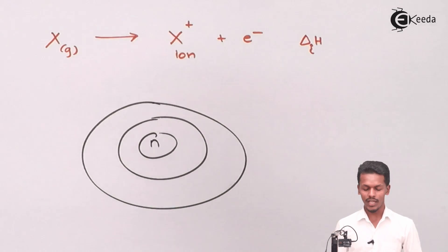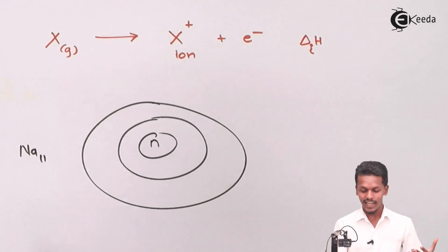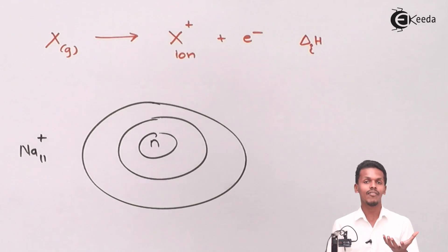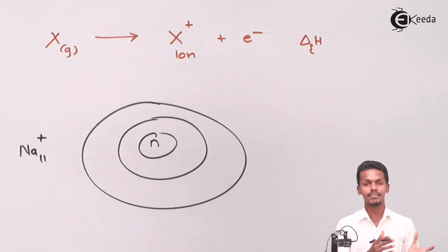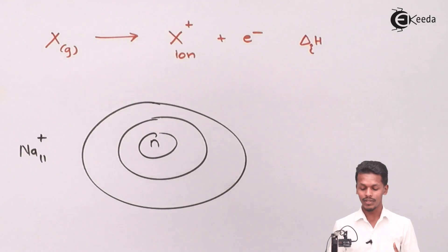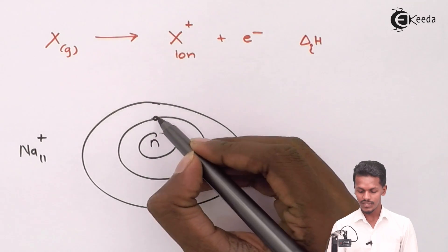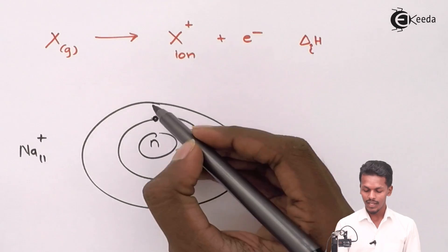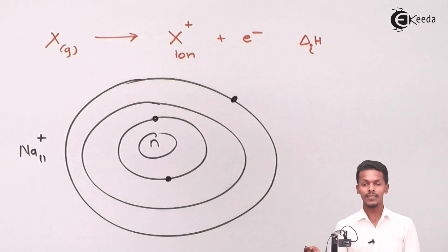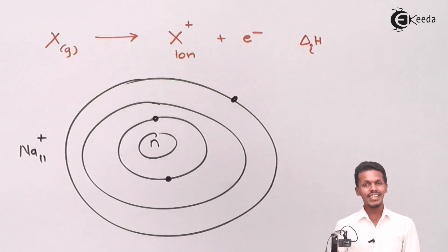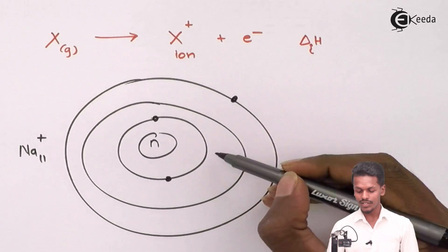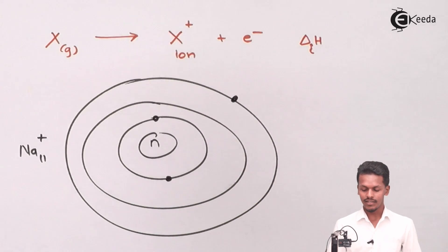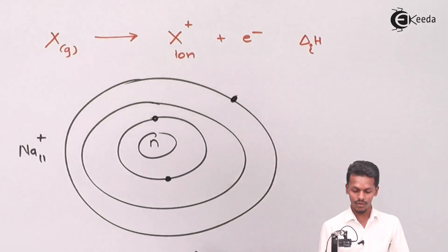Let's take sodium as an example. Sodium contains 11 electrons and 11 protons. The Na plus ion will have one electron less. The electron configuration of sodium is: the first shell has 2 electrons, the second shell has 8 electrons, and the last shell has 1 electron. So sodium in its gaseous state has 3 main shells, and this outermost electron is the loosely bonded electron of the sodium atom.